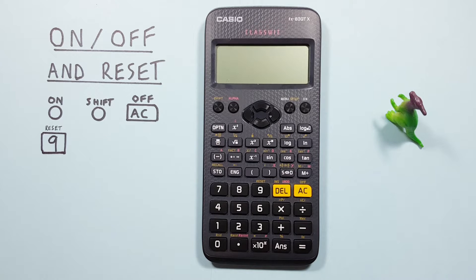the AC key with the SHIFT function of OFF that looks like this, located here, and the number 9 key with the SHIFT function of RESET that looks like this, located here.